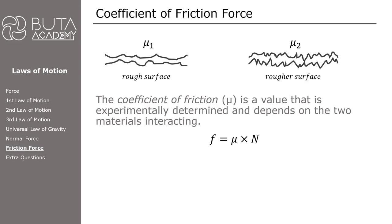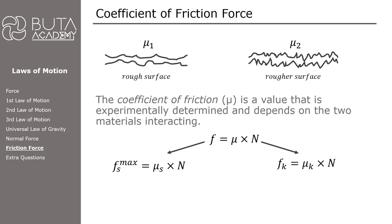There are two types of friction force, so we adjust the formula for both. The first is static friction force — we use this formula to calculate only the maximum value of static friction, since otherwise it is always equal to the applied force. The equation becomes: maximum static friction force equals the coefficient of static friction times the normal force. Once we overcome static friction, the kinetic friction force applies, calculated as: coefficient of kinetic friction times the normal force. Since maximum static friction force is slightly greater than kinetic friction force, the coefficient of static friction is also slightly greater than the coefficient of kinetic friction.